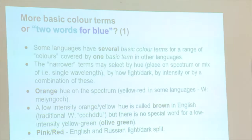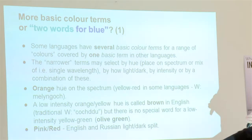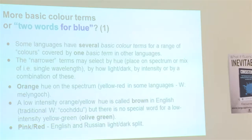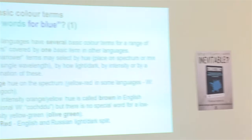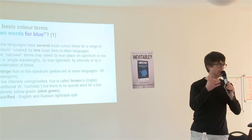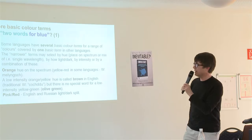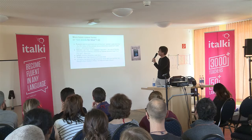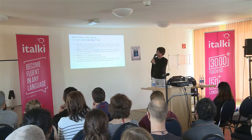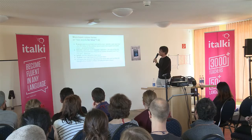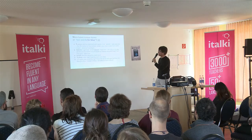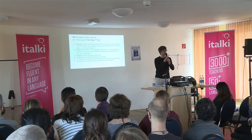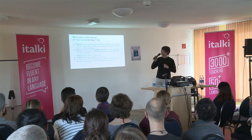The narrower terms may be selected by hue, or by how light and dark, or by intensity. Russian has 'goluboy' — the pale blue for the sky — and 'siniy' for dark blue. This is found in other languages too. In Hebrew, there are also words for light blue and dark blue, although one suggestion is this was introduced to modern Hebrew by its revivers, many of whom came from a Russian-influenced background.